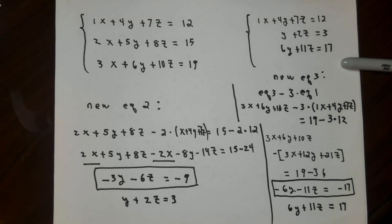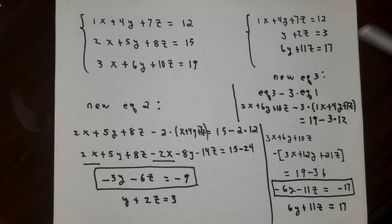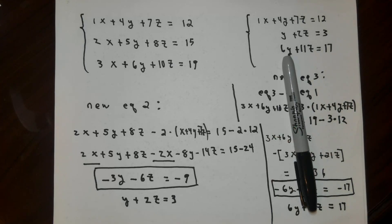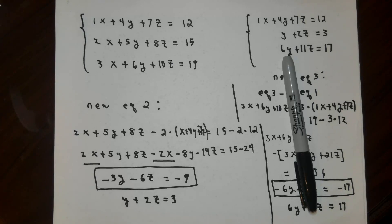Notice that what's happened is what I wanted: variable x shows up in the first equation but doesn't show up in the second or third. I do have one additional issue though. If I could get rid of the 6y term in that last equation, there would only be z's left in it — it would say some number times z equals some number. If I knew that, I could figure out what z was, then back up in my system to figure out y, then back up one more step to find x. So we will look at that next.